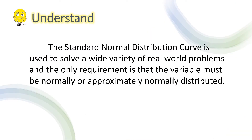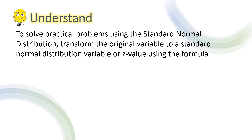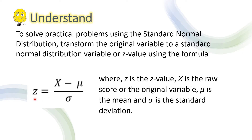The standard normal distribution curve is used to solve a wide variety of real-world problems, and the only requirement is that the variable must be normally or approximately normally distributed. To solve practical problems using the standard normal distribution, transform the original variable to a standard normal distribution variable, or z-value, using the formula: z = (x − μ) / σ, where z is the z-value, x is the raw score or the original variable, μ is the mean, and σ is the standard deviation.